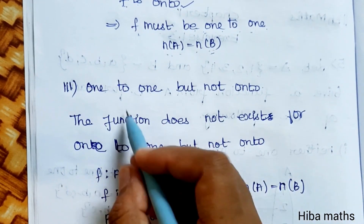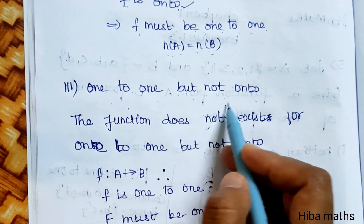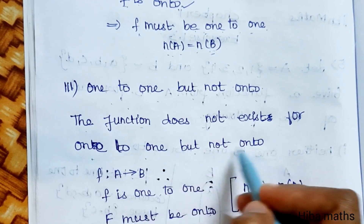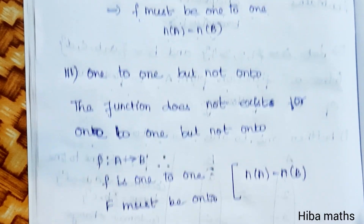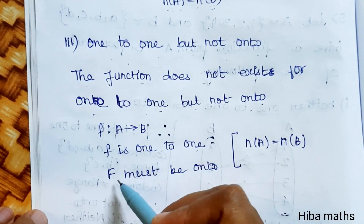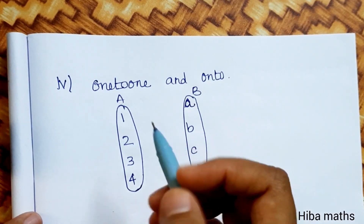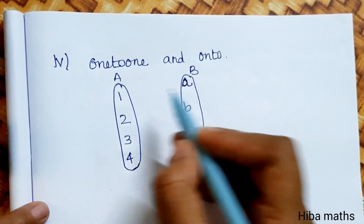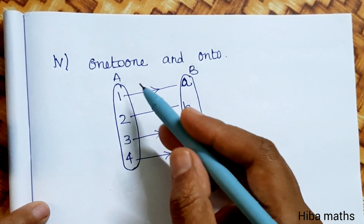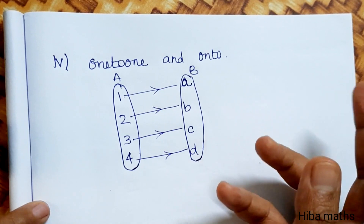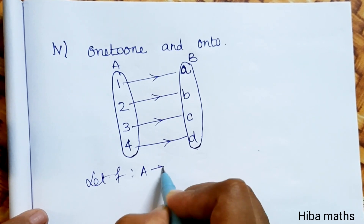Third subdivision: one-to-one but not onto. Similarly, if a function from A to B is one-to-one and |A| = |B|, then it must also be onto. So a function that is one-to-one but not onto does not exist for these sets.